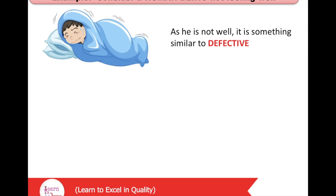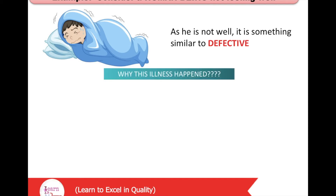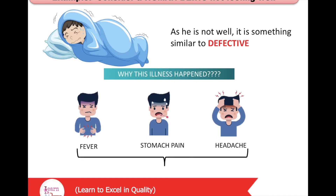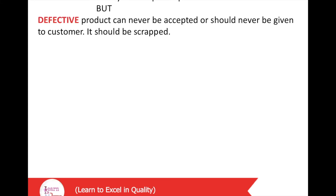Consider a human being who is not feeling well — this is similar to being defective. If we ask why this illness happened, it could be because of fever, stomach pain, or headache. All these illnesses are defects. If at least one appears, that person will not feel good, and if all have come, the same person will be suffering greatly. Hence all the illness symptoms are defects, and each one of them can be severe.